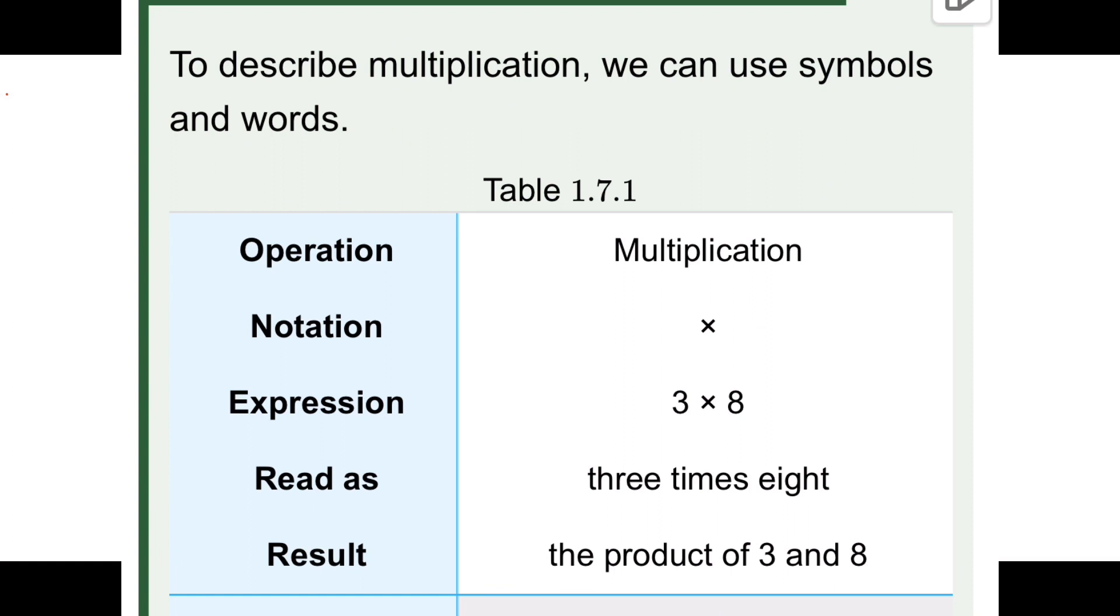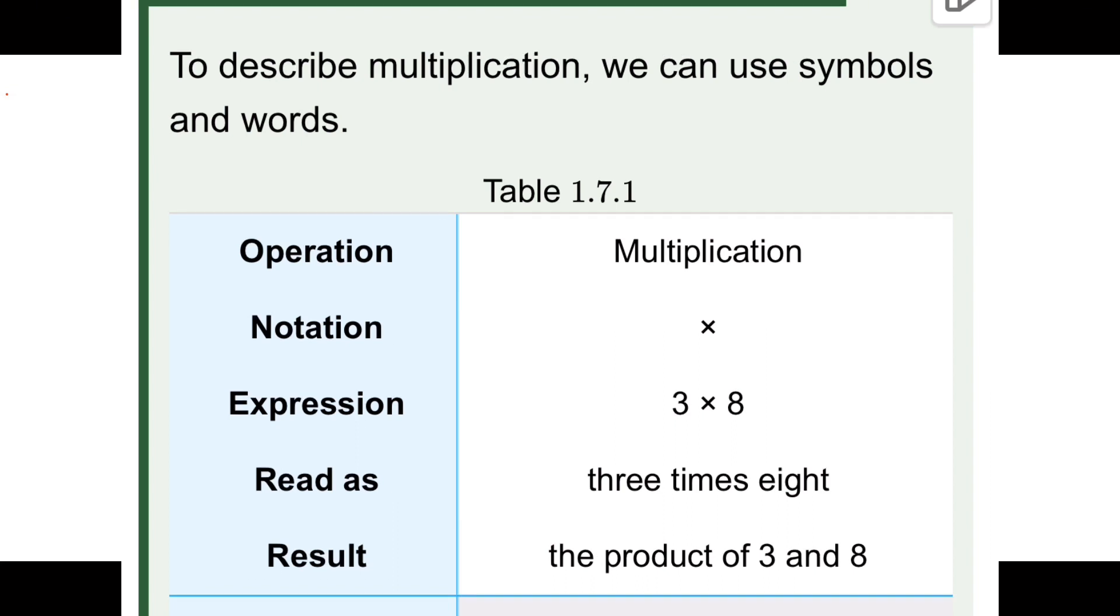To describe multiplication, we can use symbols and words. Operation is multiplication, notation is ×, expression is 3 × 8, and it is read as 3 times 8, and its result is the product of 3 and 8.